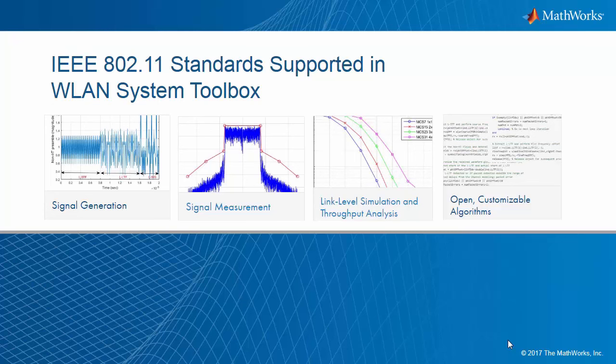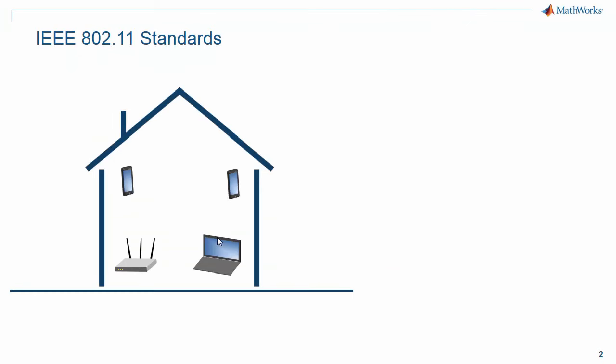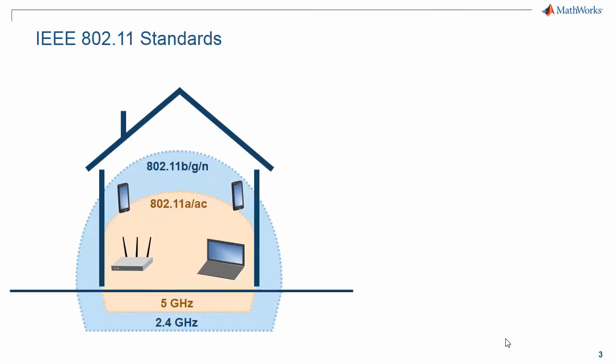This video introduces the 802.11 wireless LAN standards, and how you can model them in MATLAB with wireless LAN system toolbox. 802.11 is a set of wireless networking standards developed by the IEEE. They govern how we connect to our Wi-Fi enabled devices around the home or at the office. The most commonly used of these standards are 802.11 A, B, G, N, and AC. They operate in the 2.4 or 5 GHz frequency bands, and have a limited range of up to 100 meters.